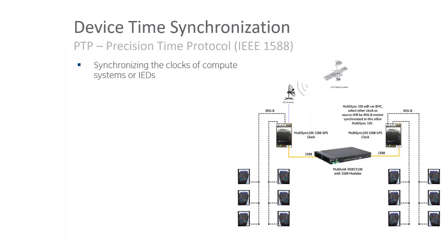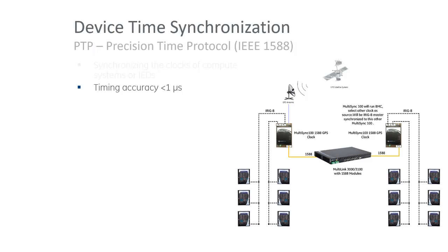Ethernet also enables time synchronization. Instead of IRIG-B, which requires a dedicated BNC cable, we can use IEEE 1588 — commonly referred to as PTP, Precision Time Protocol — to synchronize the network. The accuracy is as good as or better than IRIG-B, with less than one microsecond accuracy, making it suitable for the most demanding time synchronization applications.